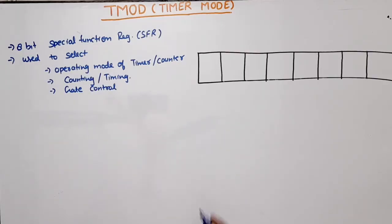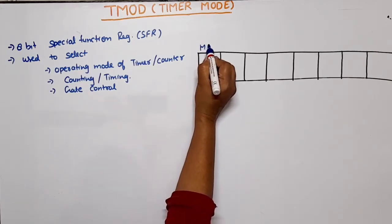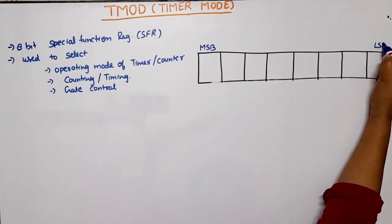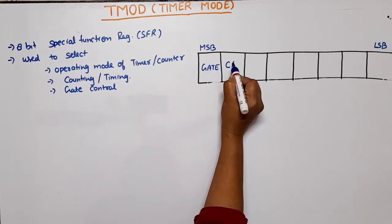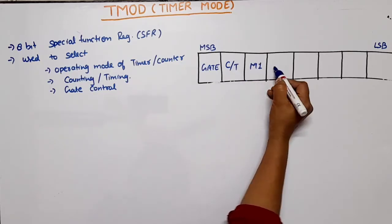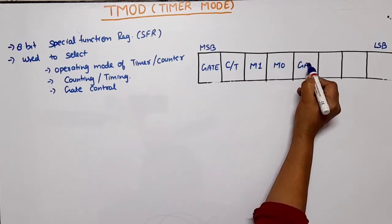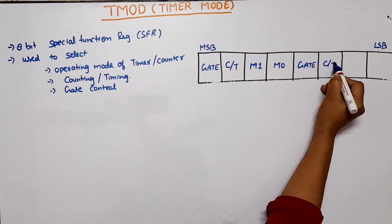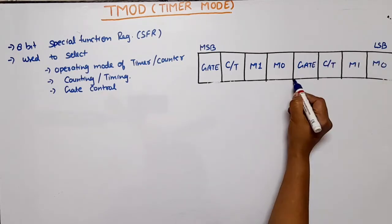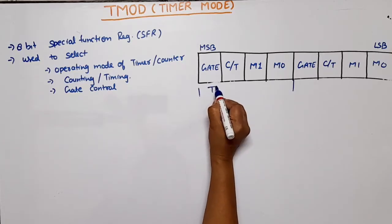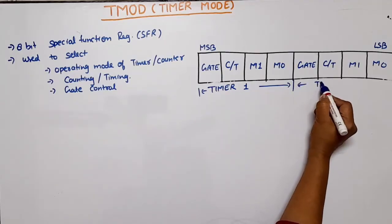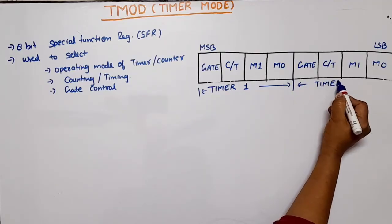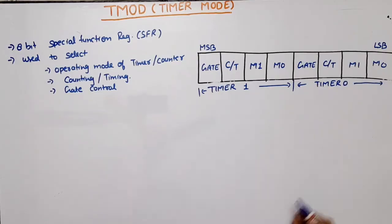If we look at this register, this is an 8-bit register. This is the MSB bit and this one is the LSB bit. Four bits are the same: first bit is for gate control, second is C/T counter/timer, M1 and M0 are for mode. This is for Timer 1 and this is for Timer 0. These timers are on-chip.